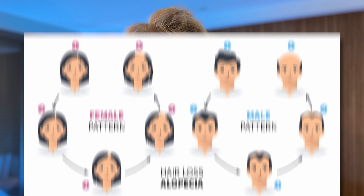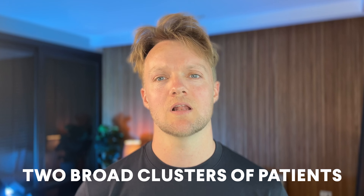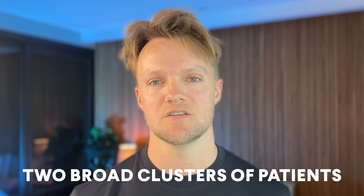In the US, 1.7% of the population will get alopecia areata at some point in their lives and up to 20% of these will be children. In adulthood, AA affects men and women at the same rate, and research suggests that there are two broad clusters of patients.